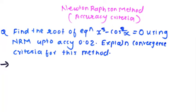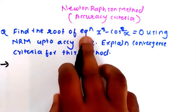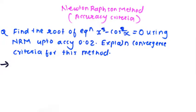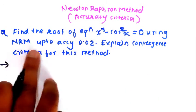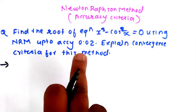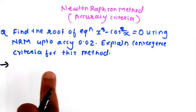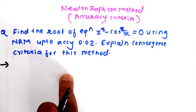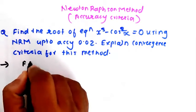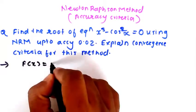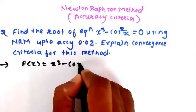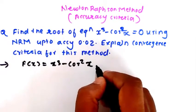Hello everyone. In this video we are going to see the Newton-Raphson method. We have to solve with the help of accuracy criteria. The numerical we are going to solve is: find the root of the equation x³ - cos²x = 0 using the Newton-Raphson method. The function f(x) is equal to x³ - cos²x.